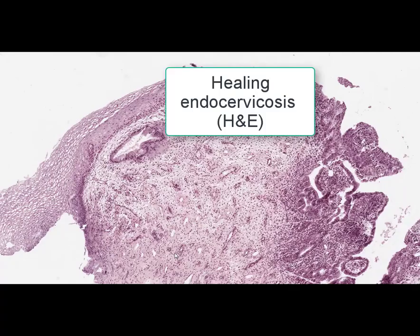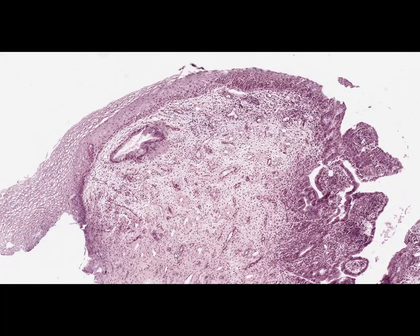On this slide we can see a uterine cervix, stained by hematoxylin and eosin. The name of the slide is healing endocervicosis. Endocervicosis, or cervical pseudo-erosion, also known as glandular erosion, is a pathological condition based on metaplasia — specifically replacement of non-keratinized stratified squamous epithelium by single-layered glandular epithelium. Three consecutive stages are distinguished in the course of endocervicosis.